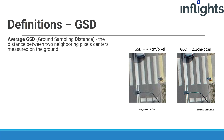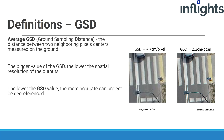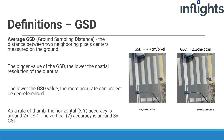Average GSD, or ground sampling distance, is the distance between two neighboring pixels' centers measured on the ground. The bigger the GSD value, the lower the spatial resolution of the outputs. GSD affects accuracy: the lower the GSD value, the more accurately the project can be geo-referenced. As a rule of thumb, horizontal accuracy is around two times the GSD, and vertical accuracy is around three times the GSD.